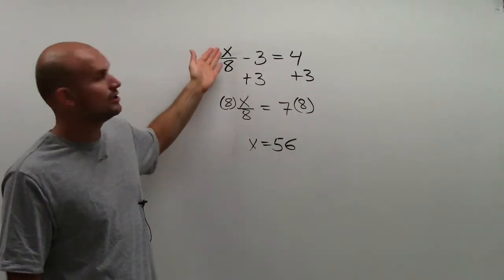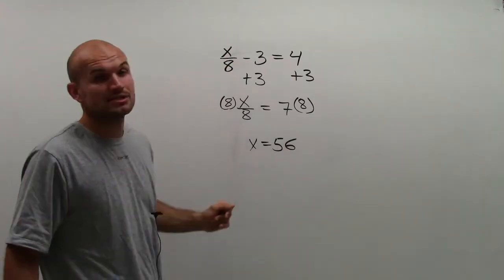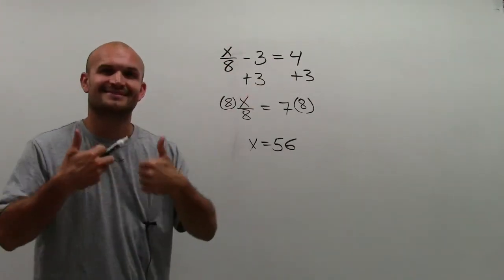And again, you can just plug it in and take a look. 56 divided by 8 is 7. 7 minus 3 is 4. We're good.